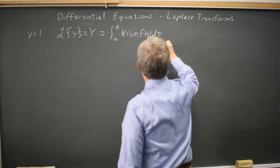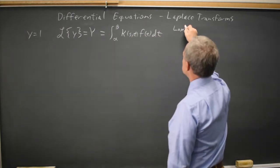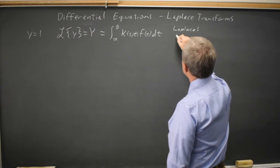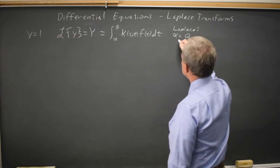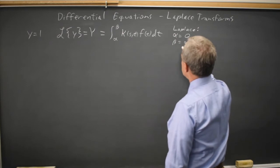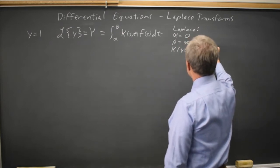For Laplace, we use alpha equals 0, beta equals infinity, and k of s t equals e to the negative s t.